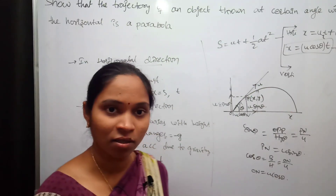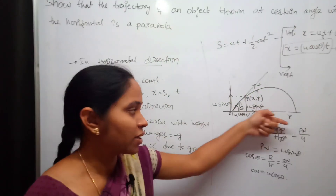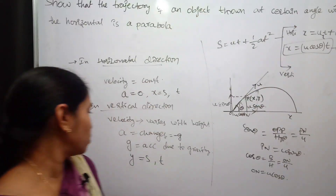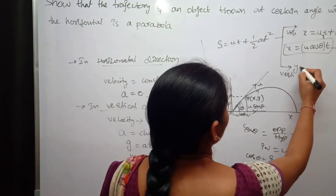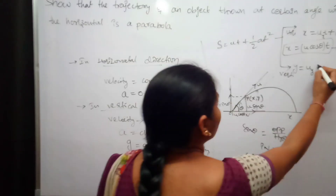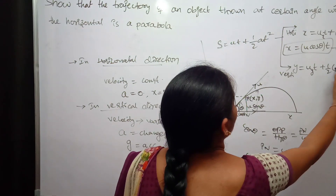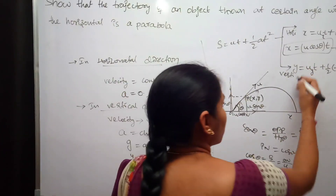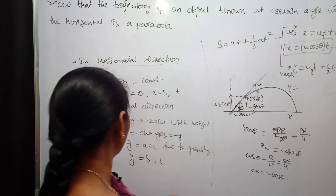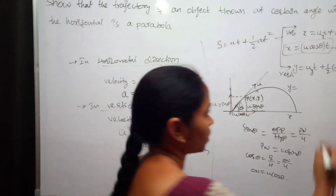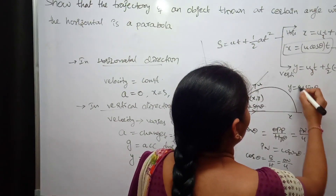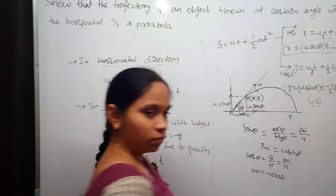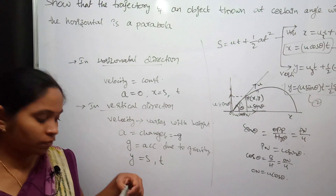Coming to the vertical component: y is the displacement along the y-axis and t is the time taken to reach point P along the vertical direction. Using s = ut + ½at² with acceleration equal to minus g: y = u_y · t + ½(−g)t², where u_y = u sinθ. Therefore y = u sinθ · t − ½gt². This is equation number two.